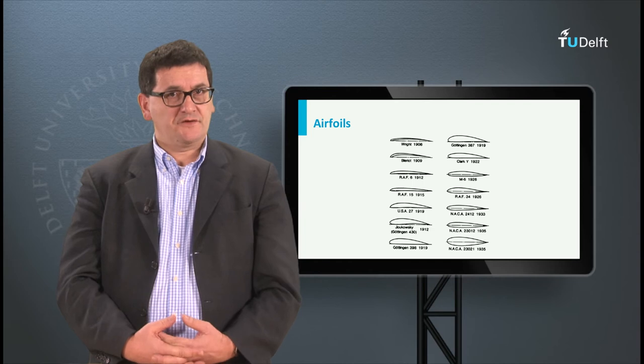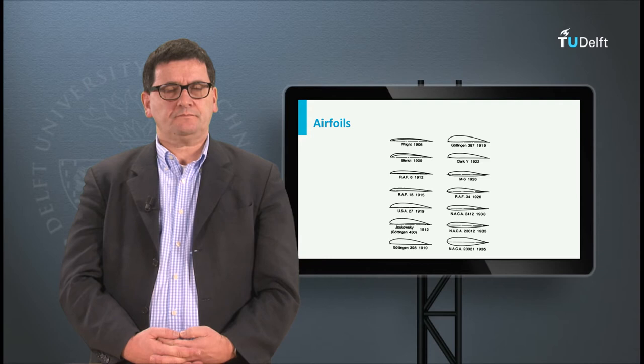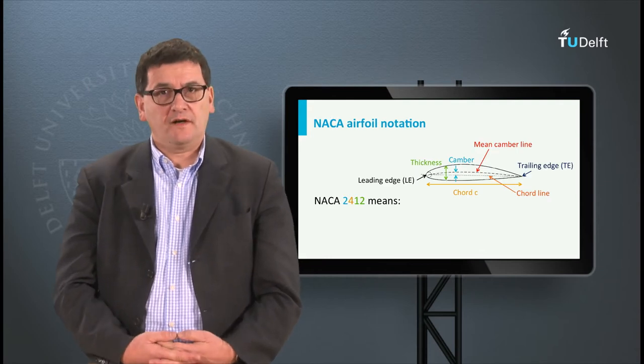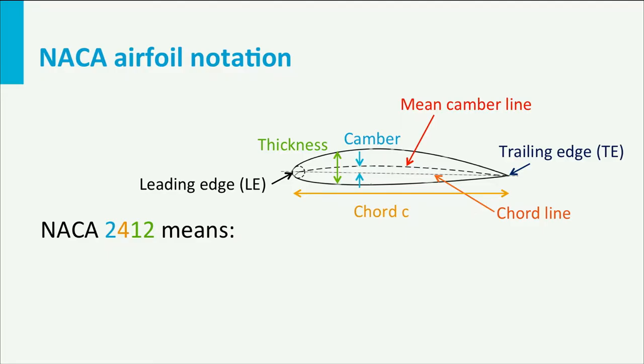NACA stands for National Advisory Committee for Aeronautics, a committee founded in the US. NACA airfoils are identified by a specific four-digit number. In the figure you can see a number of features of an airfoil like the positions of the leading edge, the trailing edge, the chord line and its length, the profile thickness and the camber. Some of the dimensions of these features are represented in the NACA number. Note that all dimensions are expressed as percentage or fraction of the chord length.